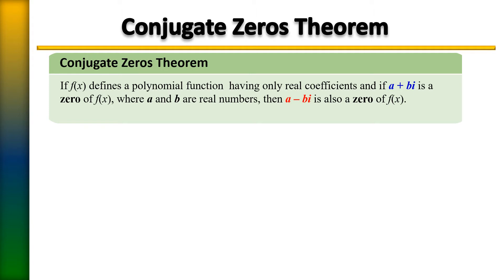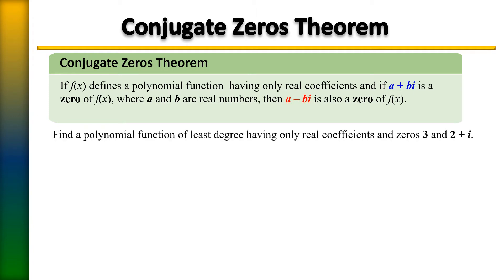In this example, we're asked to find a polynomial function of least degree having only real coefficients and zeros 3 and 2 plus i. We have two zeros given to us and we are told to find a polynomial of least degree.